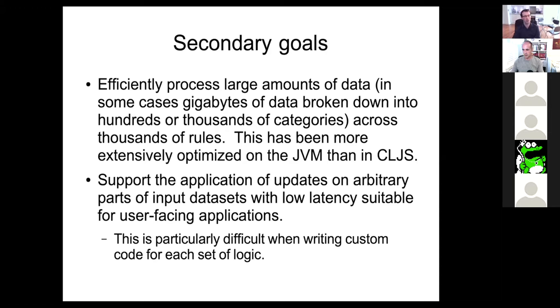The primary goal is to be understandable and to improve developer efficiency. But secondly, Clara has been used on some problems that we're processing very large amounts of data. So the performance requirements on this were quite strict. This has been quite heavily optimized on the JVM. As a reference here, thousands of rules, gigabytes of data that could be hundreds of thousands of facts. Now, while Clara does support ClojureScript in the interest of full disclosure, the ClojureScript side has not been heavily optimized in the same way.